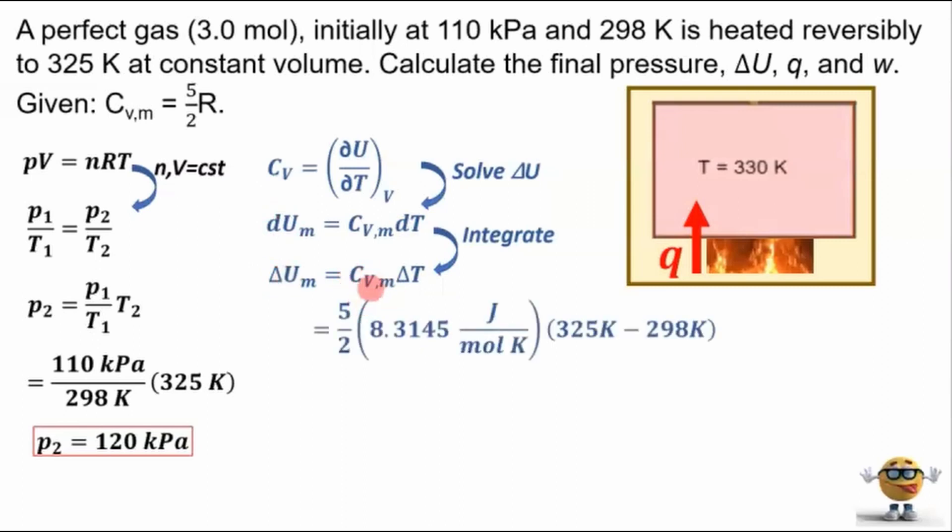And we can plug in numbers now. We know what the heat capacity, molar heat capacity is. It's just right here. And we want to use the R that has joules in because internal energy is an energy. So it'll be in joules, joules or kilojoules usually. And we have our change in temperature, final temperature minus initial temperature. And if we plug that in, that gives us 561 joules per mole. So that's the change in the molar internal energy.